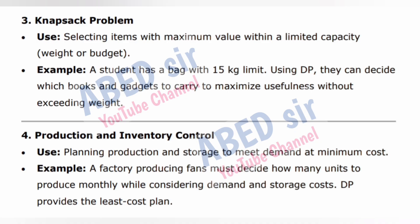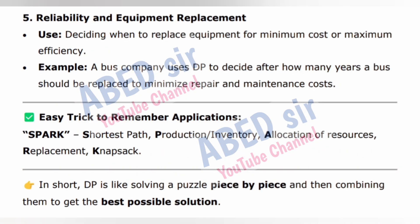4. Production and inventory control — planning production and storage to meet demand at minimum cost. Example: A factory producing fans must decide how many units to produce monthly while considering demand and storage costs. DP provides the least cost plan. 5. Reliability and equipment replacement — deciding when to replace equipment for minimum cost or maximum efficiency. Example: A bus company uses DP to decide after how many years a bus should be replaced to minimize repair and maintenance costs. In short, DP is like solving a puzzle piece by piece and then combining them to get the best possible solution.